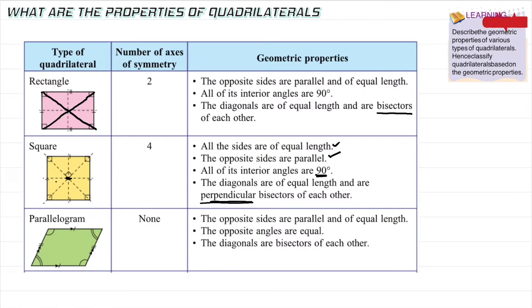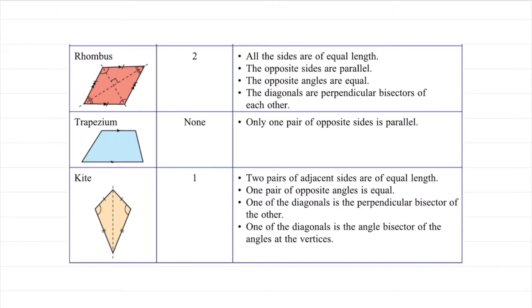The third quadrilateral is a parallelogram. It has no axis of symmetry — you won't find any line that divides it into two equal halves. The opposite sides are parallel and equal in length — different from a square where all sides are equal. The opposite angles are also equal; for instance if this angle is 36, the one directly opposite is also 36. The diagonals are bisectors of each other.